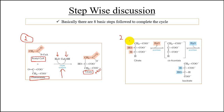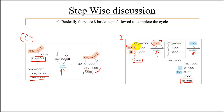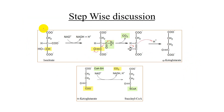Moving on to the second step: citrate is rearranged to form isocitrate. The enzyme aconitase catalyzes this reaction. A water molecule is removed in the process, and after rearrangement, isocitrate is formed. This transformation is the second step of the cycle.